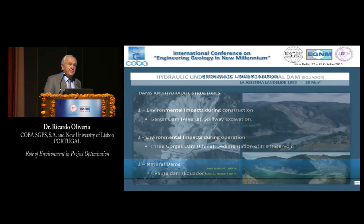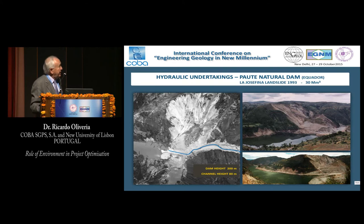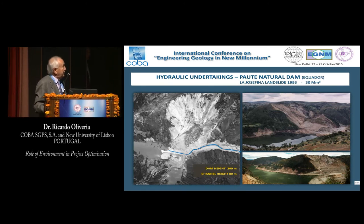Concerning natural dams, you probably heard about the La Josefina landslide in Ecuador, in which 30 million cubic meters of material came down, forming a natural dam 200 meters high with many people living downstream. We had to act immediately with European Union support to Ecuador. The first work done was construction of a channel 80 meters deep to allow part of the water to drain downstream. We still had a large reservoir and had to design ways to improve the quality of this embankment, which was obviously poor.